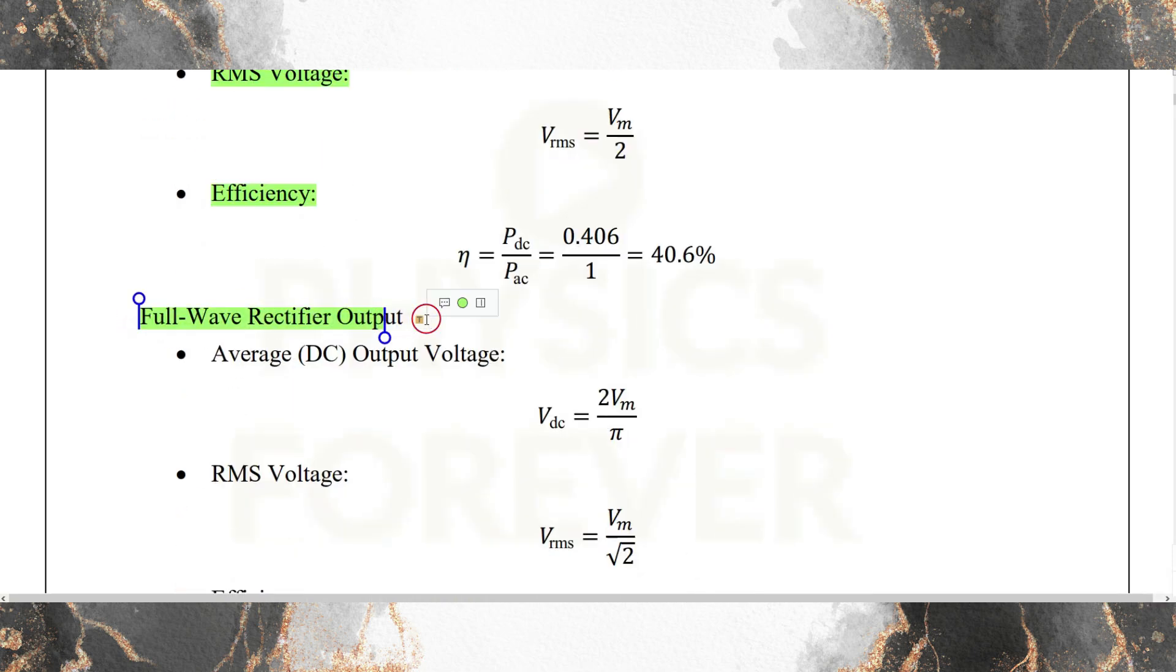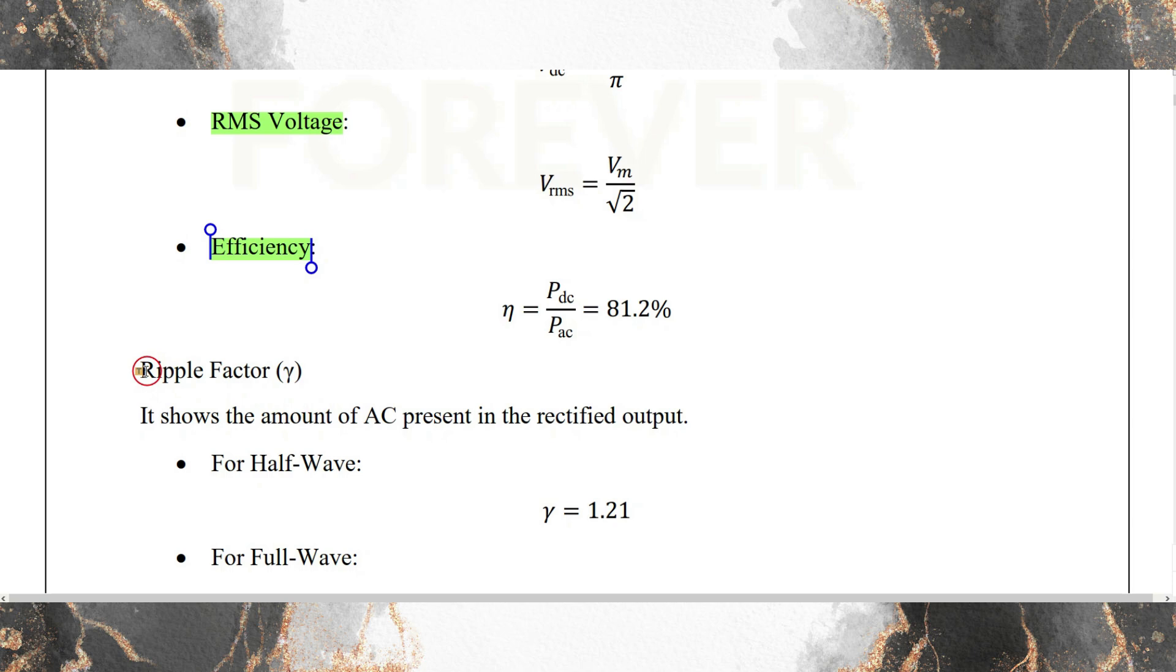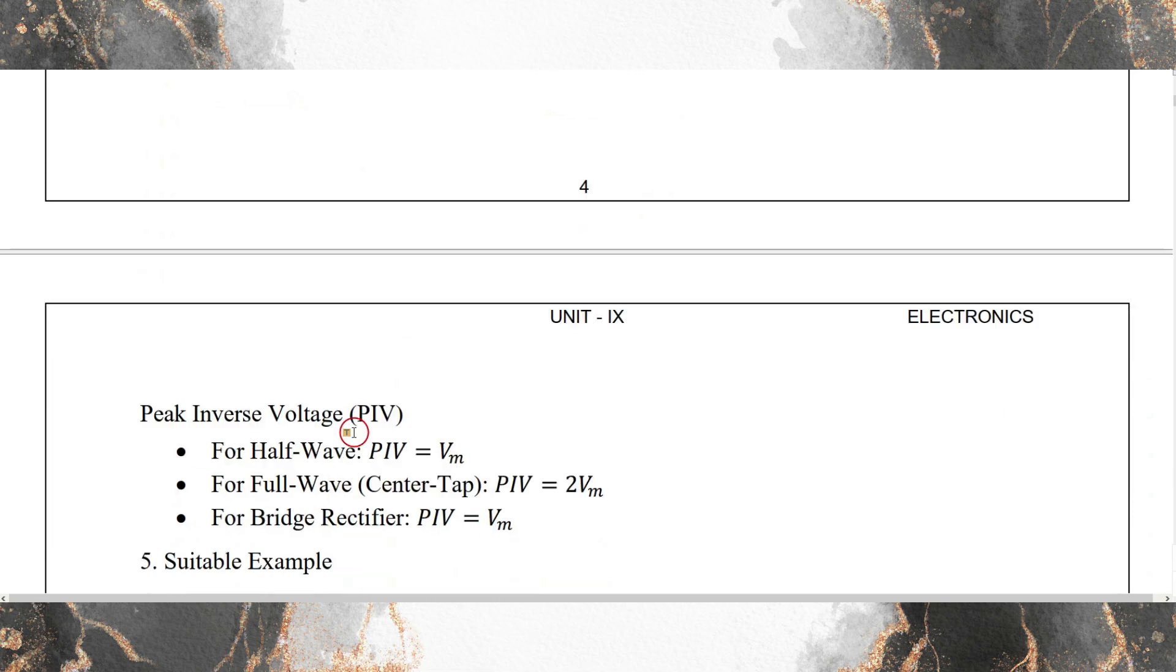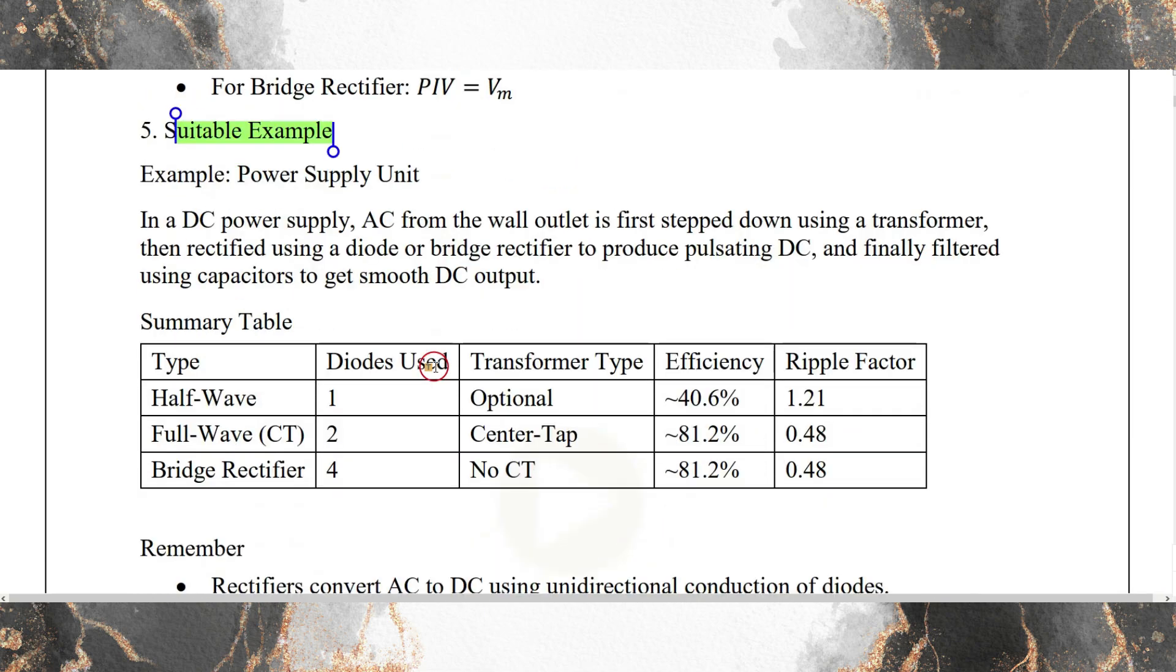Output RMS voltage, then efficiency, then ripple factor - the most important values with suitable examples. Last we have to do the summary of the topic. In the middle of the topic we have to prepare in a safe manner from the first to the last topic.